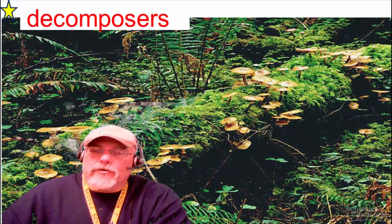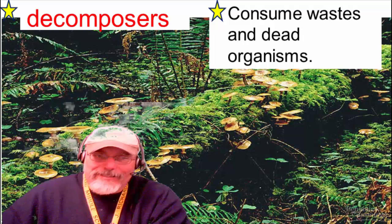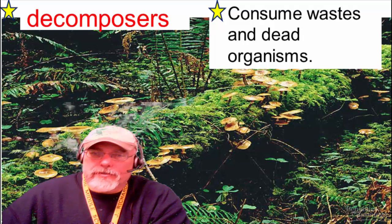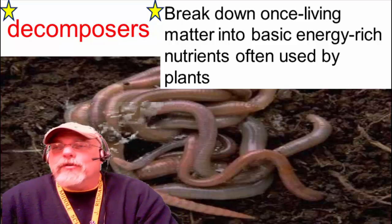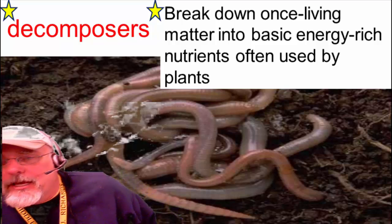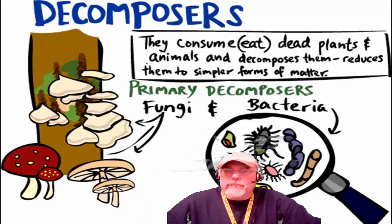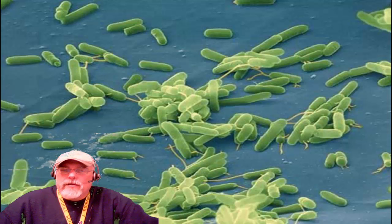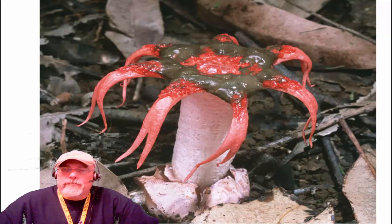Decomposers are a consumer type that is often neglected. Decomposers will consume waste and dead organisms. They have a very important role — they break down once-living matter into basic energy-rich nutrients that are often used by plants. Examples include bacteria and fungus.